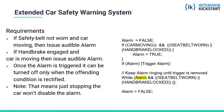Now let's extend the requirements for the car safety warning system a little bit. The requirements are exactly the same as before, except that once the alarm is triggered it can be turned off only when the offending condition is rectified. Note that this means just stopping the car won't disable the alarm — one has to either wear the seat belt or remove the handbrake. So even though the trigger condition was only when the car was moving, once the alarm is triggered we want it to continue until the actual cause is rectified.